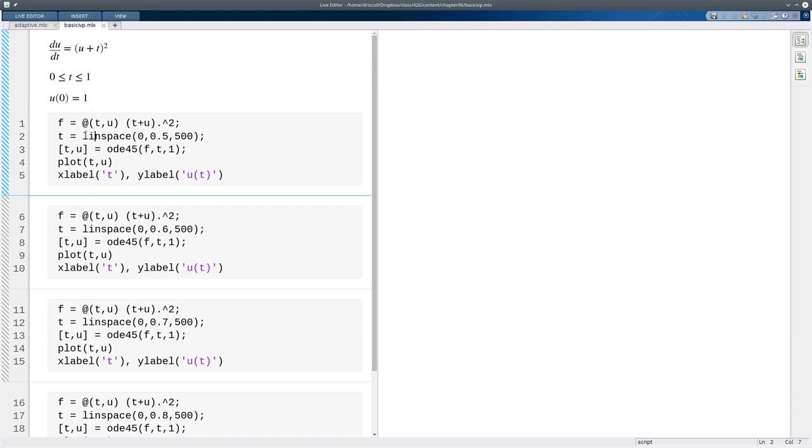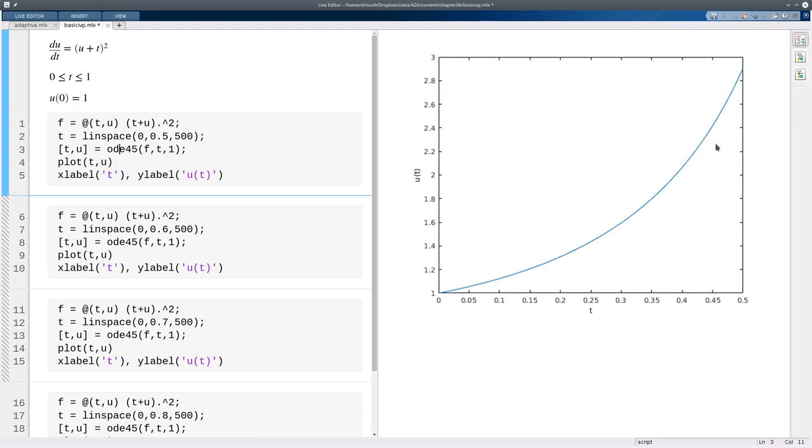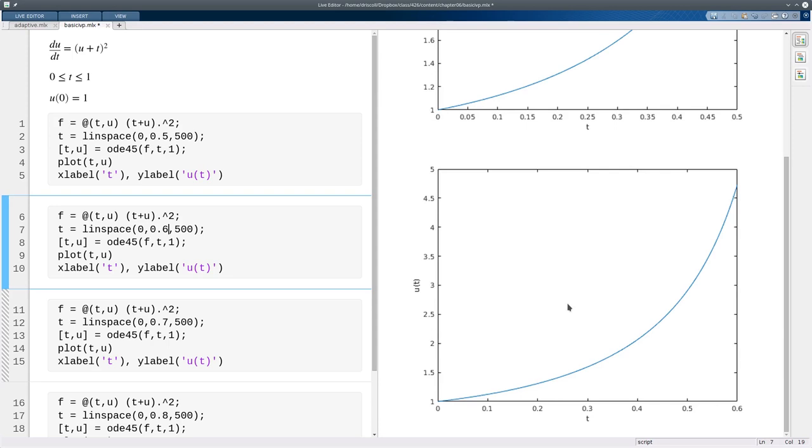I'm not going to go all the way up to 1 right away. Let me start by going up to 1 half. And I'll call ODE45 with f, the time points, and the initial value. Plot the result. So that looks pretty innocent. Let me go out a little bit further. Let me go from 0 to 0.6. Still looks fine. Maybe it's exponential growth.